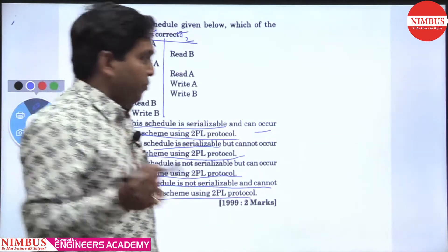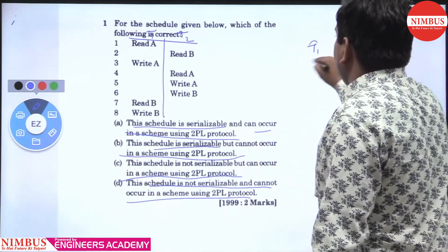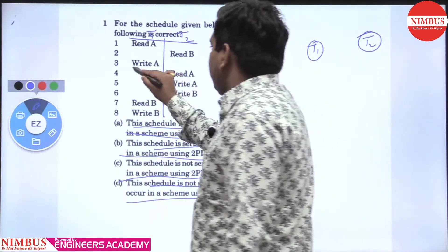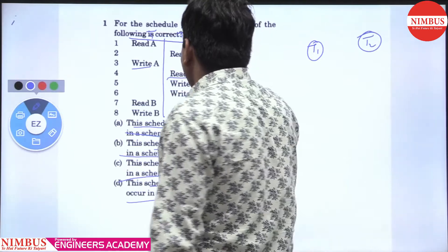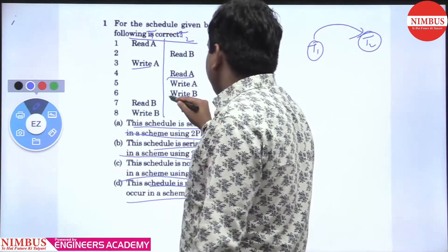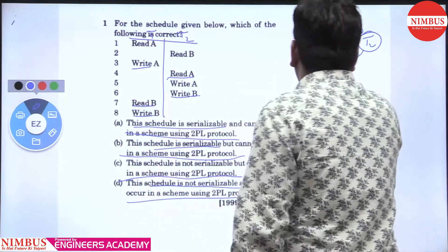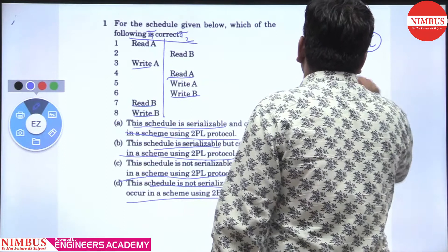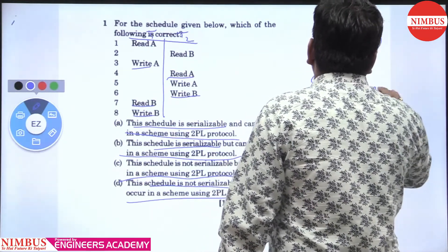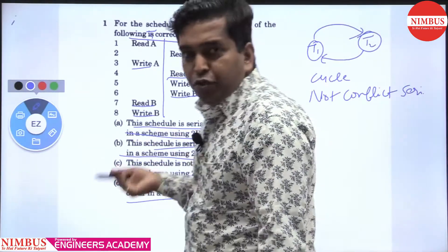First we check if the schedule is conflict serializable using the precedence graph method. There is a write A, then read A, so there is an edge from T1 to T2. Then write B, read B, and write B. This makes a cycle. If there is a cycle, then it is not conflict serializable — it may or may not be view serializable.